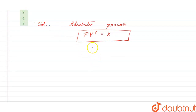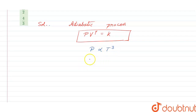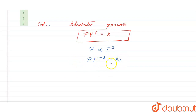In this question, it is given that there is a relationship between pressure and temperature: pressure is directly proportional to the cube of the temperature. So we can write P·T⁻³ = k1, where k1 is the constant of proportionality according to the question.